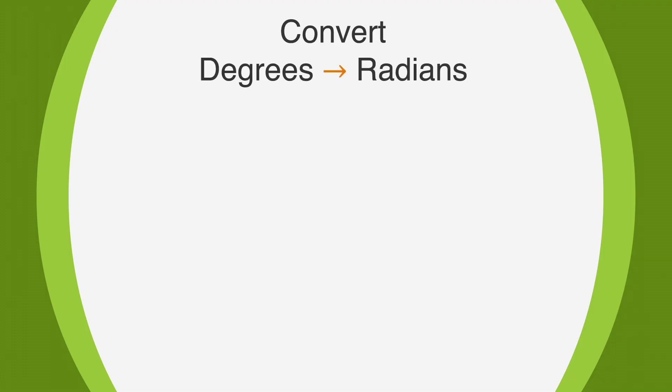If you need to convert degrees to radians, multiply by pi over 180.